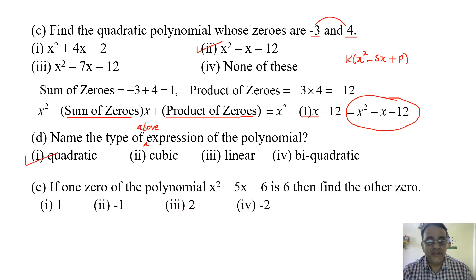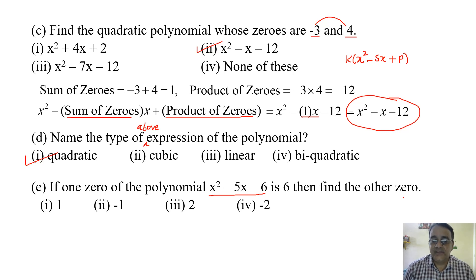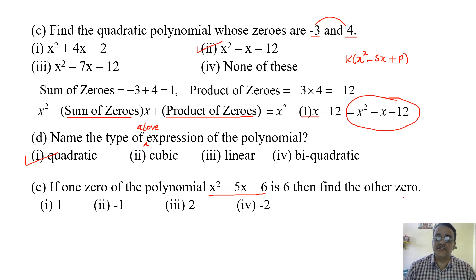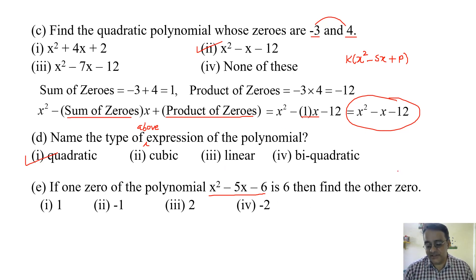Now the next question: If one zero of the polynomial x squared minus 5x minus 6 is 6, then find the other zero. This is a logical question. Many students had a doubt that 6 cannot be a zero by substitution. This is only a logical question. We use the sum of zeros formula, which is minus b by a.